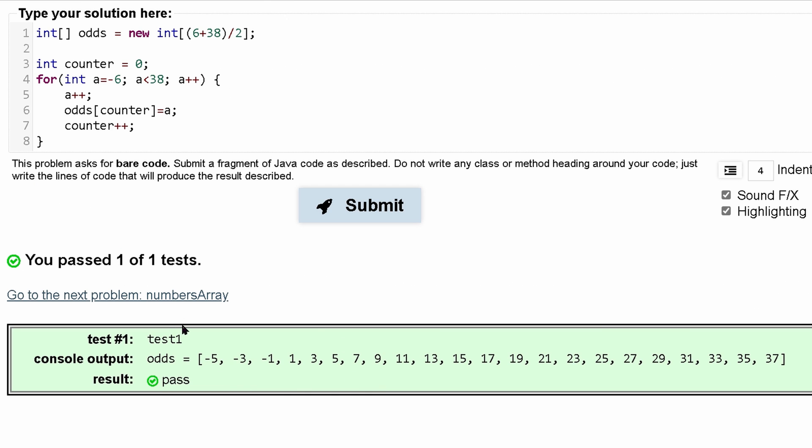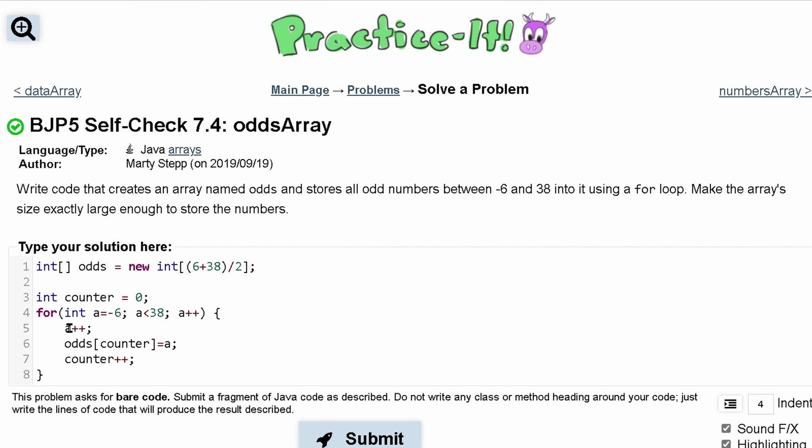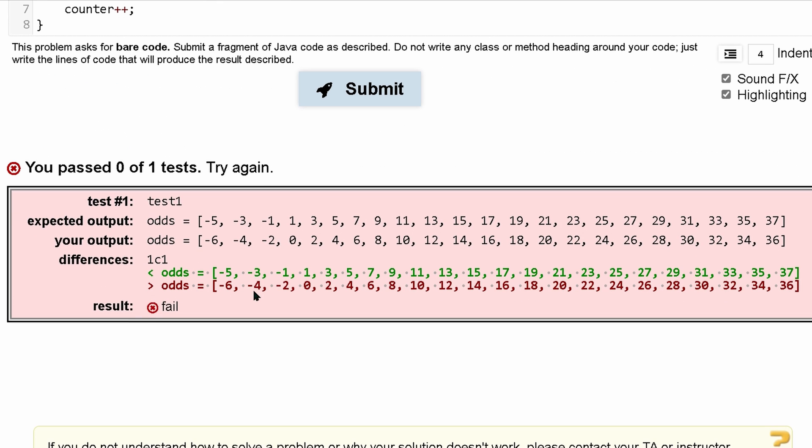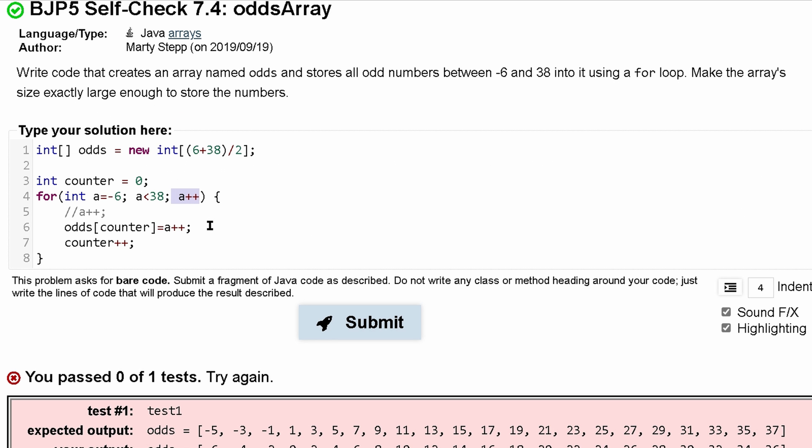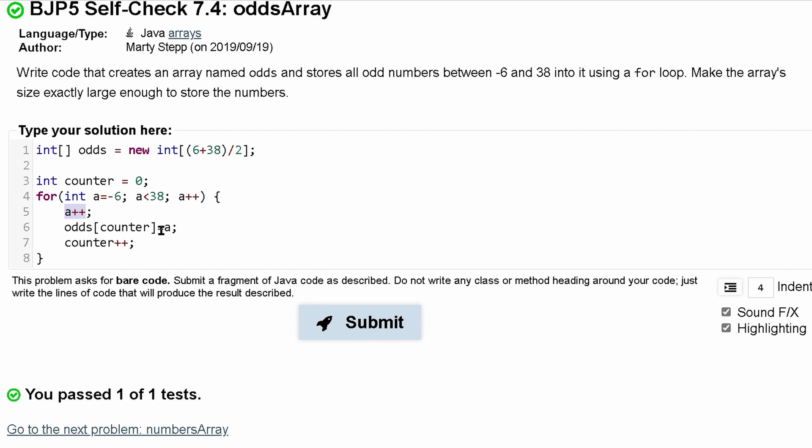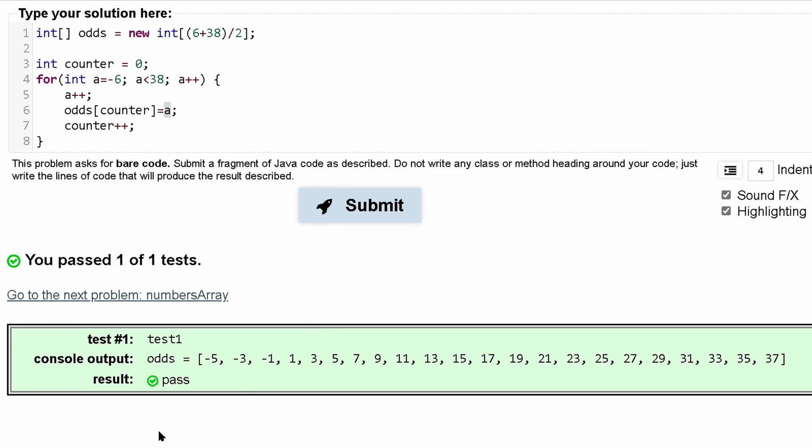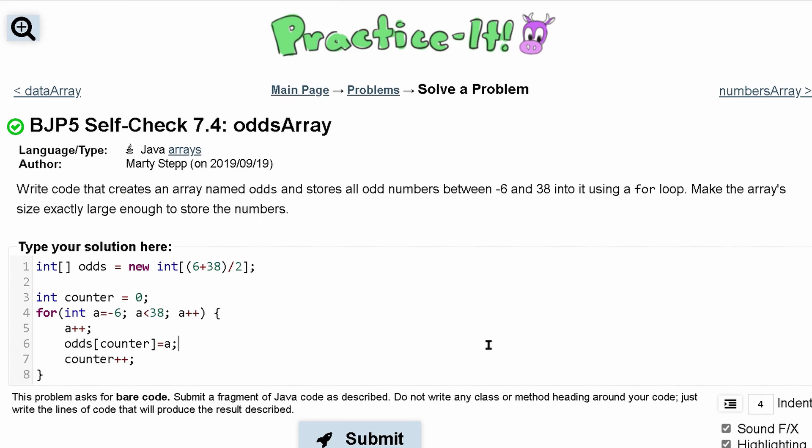We pass one out of one test. Now, I believe we can try doing this where we just increment a when we go through here, and see that fails because it's giving us even numbers since we only have one incrementation right here, and we can't increment it when we're storing into the array. It doesn't work like that. So we're going to have this out here, and we're just going to store it in like this, and that is going to pass our test for odds array.